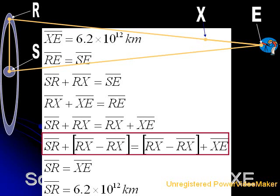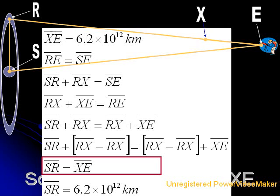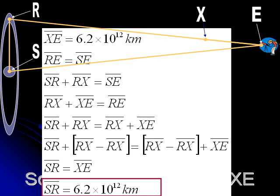In this next step, since our goal is to solve for SR, we need to do a little bit of algebra. We're going to subtract RX from both sides of the equation, leaving us with SR equals XE. Now, because we know the value of XE, we can conclude, finally, that SR equals 6.2 trillion kilometers.